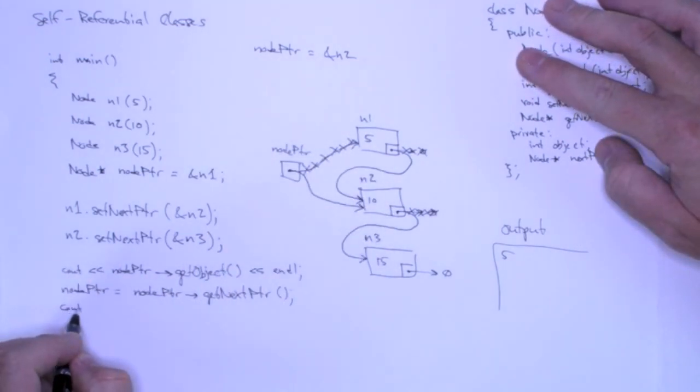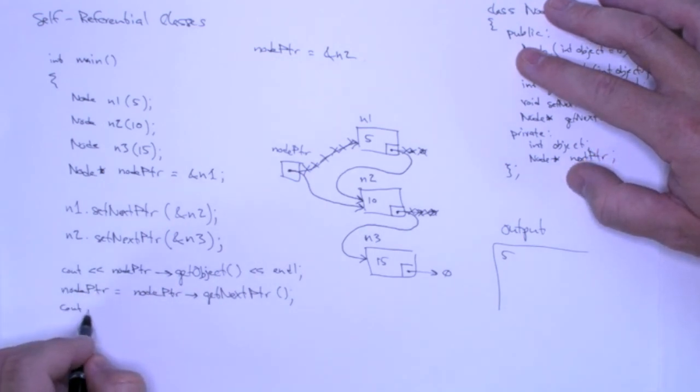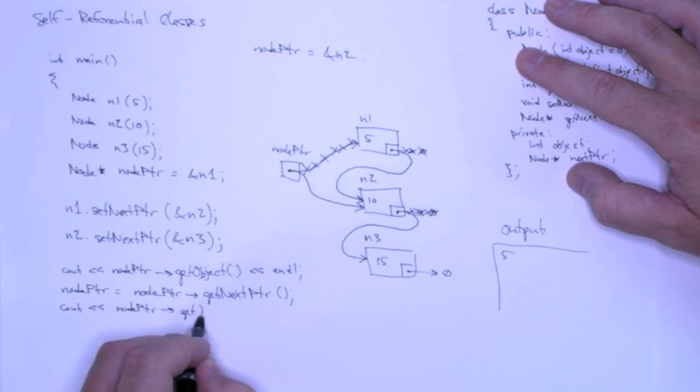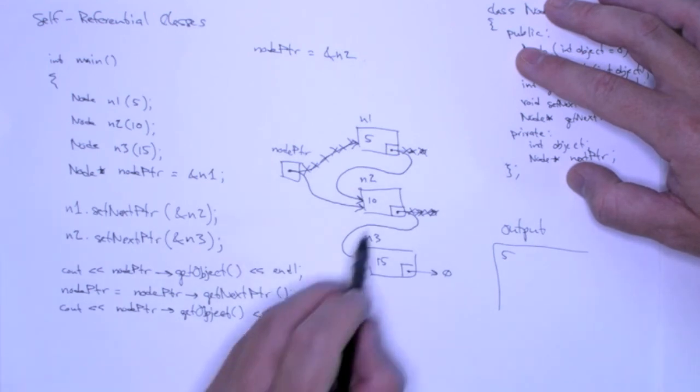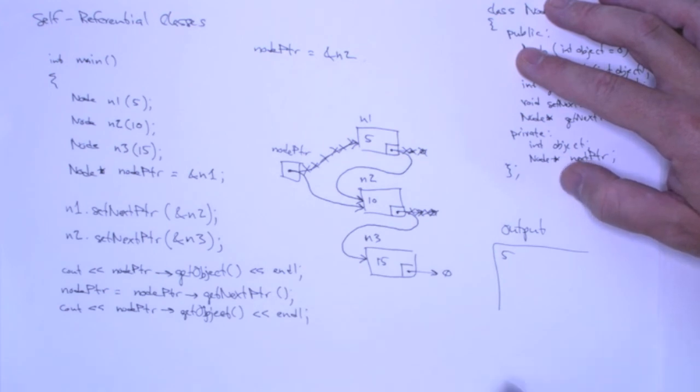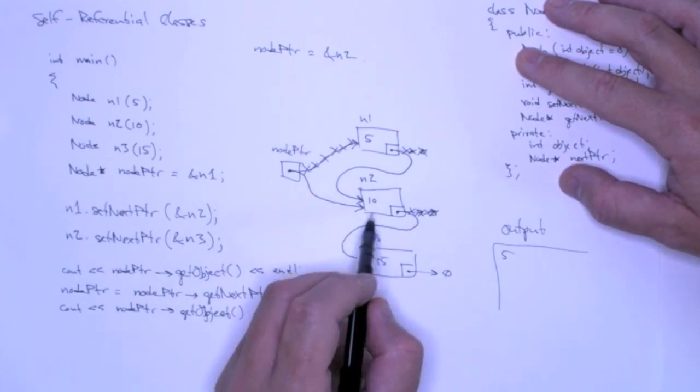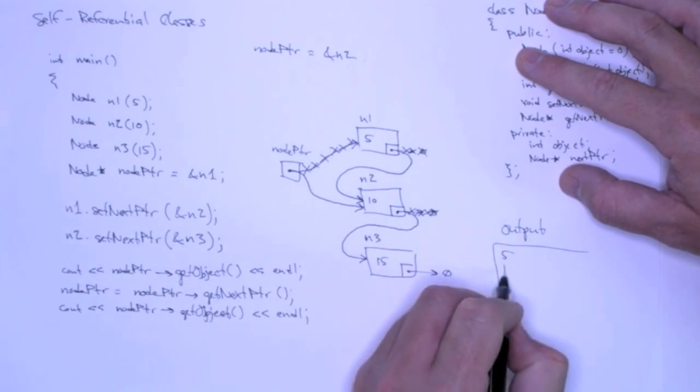And I'm in exactly the same situation. I can say cout. Now I want to print n2's value. So I can say cout node pointer get object. Node pointer points to n2. I'm calling n2's get object, and it returns 10, so this is going to print 10.